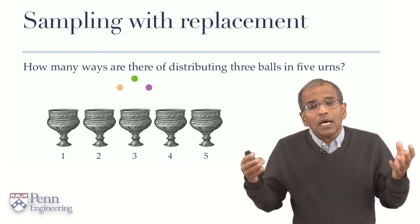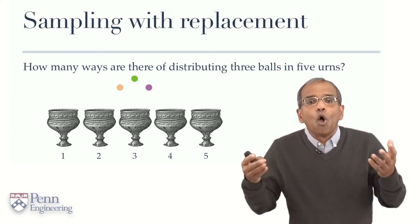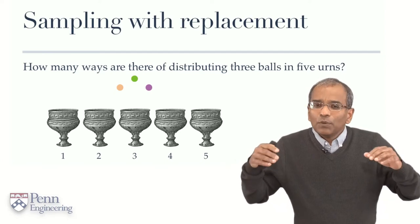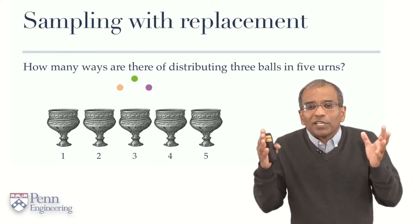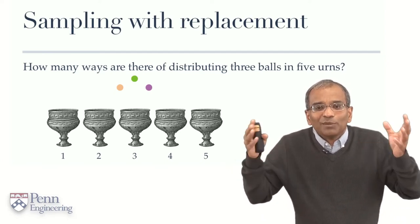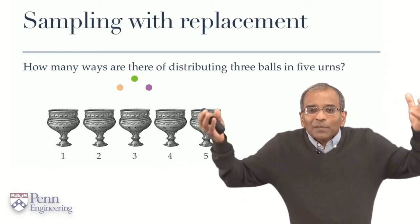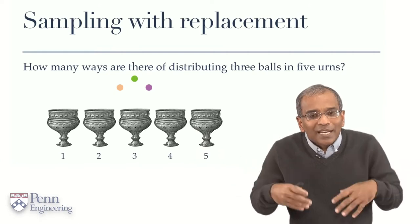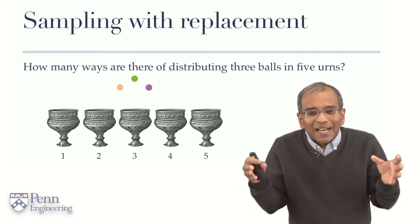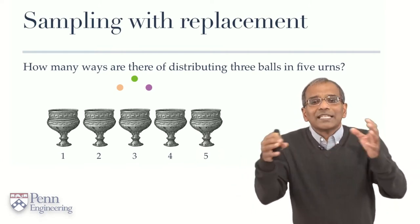For us, an urn is a receptacle, a box, a cell. You would imagine that these are metaphorical urns, metaphorical boxes. They are infinitely distensible. You can put in as many elements as you want inside them, so they are not limited in capacity.